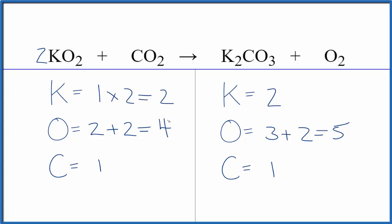Let's update the oxygen atoms though. So we have our two times two, that's four, plus these two right here. We have six. So it's kind of problematic now. We have a six and a five.